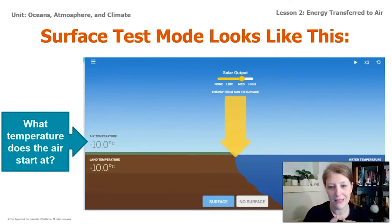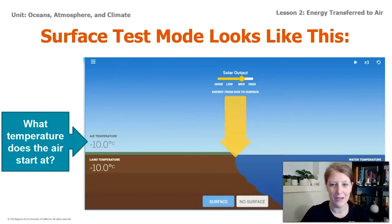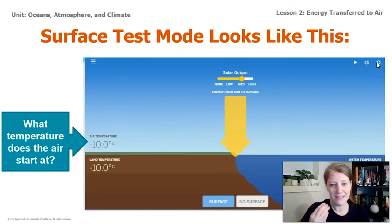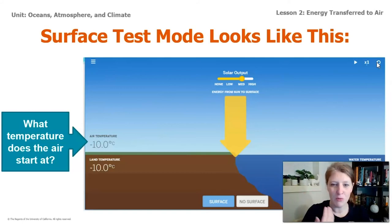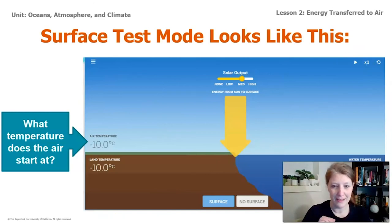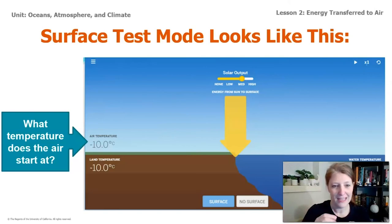The surface test model looks like this, and as soon as it starts, it just starts going. The first thing I always do is hit the pause button, then reload it. The default is to start with medium solar output — let's leave it at that. We only need to let the Sim run for about one minute before we'll have enough evidence to support claim one or two. If you have access to the Sim, stop this video, go open it up and check it out, then come back. If you don't have access, stay with me and I'll walk you through it and we can record some evidence together.